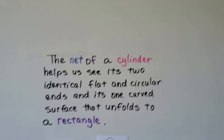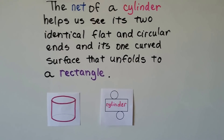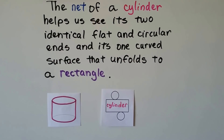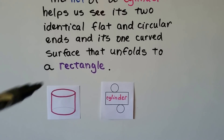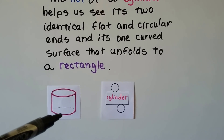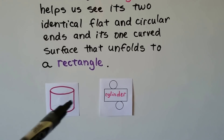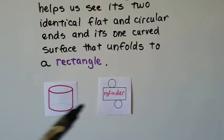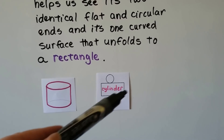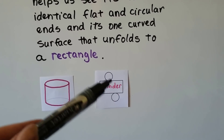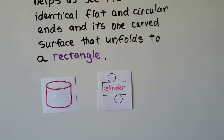The net of a cylinder helps us see its two identical flat and circular ends, and its one curved surface that unfolds to a rectangle. So it's got a circle on the top, it's got a circle on the bottom for its base, and this unfolds into a rectangle when it's not curved. You can cut this out, tape this end to this end, and fold this down and this up, and make a cylinder.